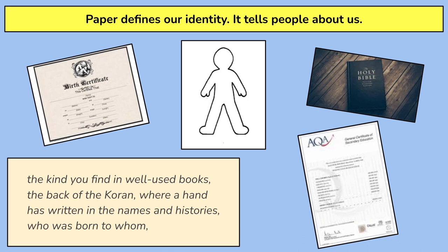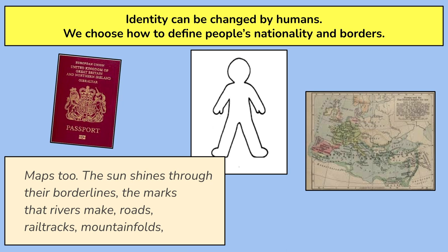There's also this implication that identity can be changed by humans — it is what we make it. For instance, with maps, we choose how to define nationality and borders. At some point throughout history, humanity has gotten a piece of paper and drawn where the borders are and decided: if you're from this part, you are this nationality; whereas if you're from this part, you are this nationality. That has been decided by humanity. And again, this highlights how important paper is in our lives and perhaps draws attention to the fact that some of the restrictions we put in place are there because humanity has put them there. Nature hasn't done it — we've decided where these limits are.